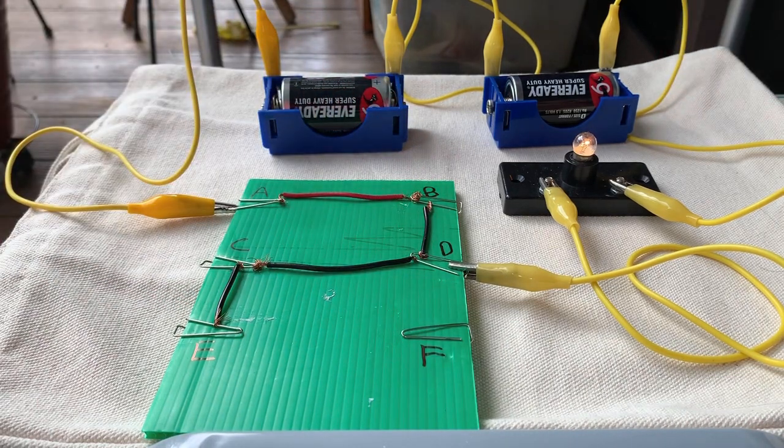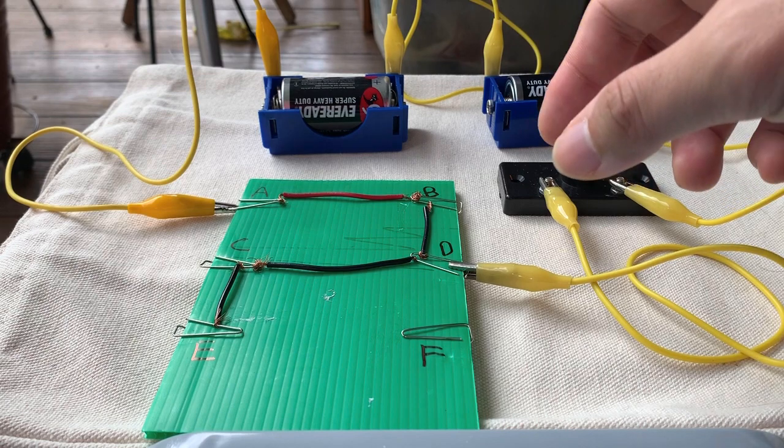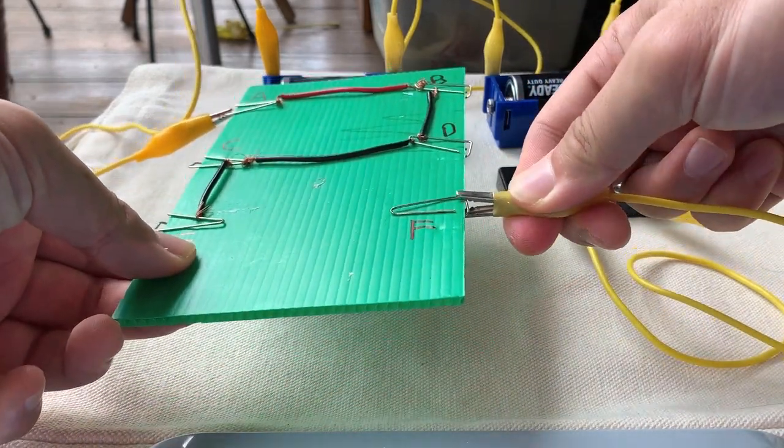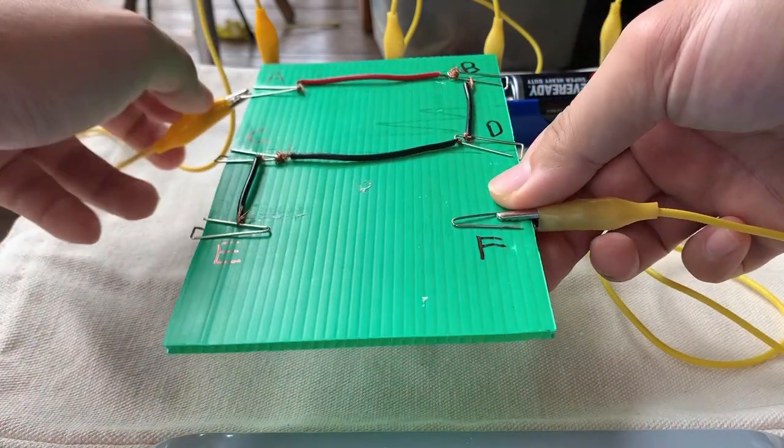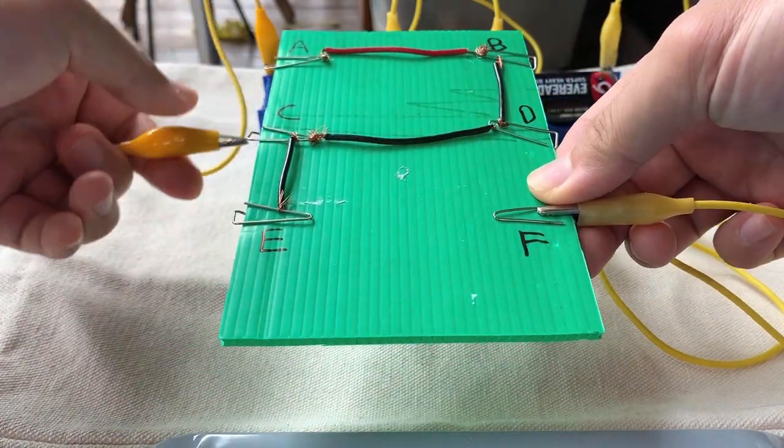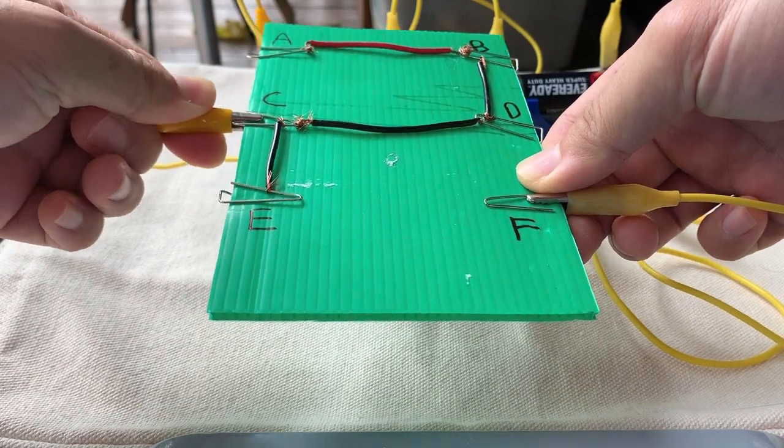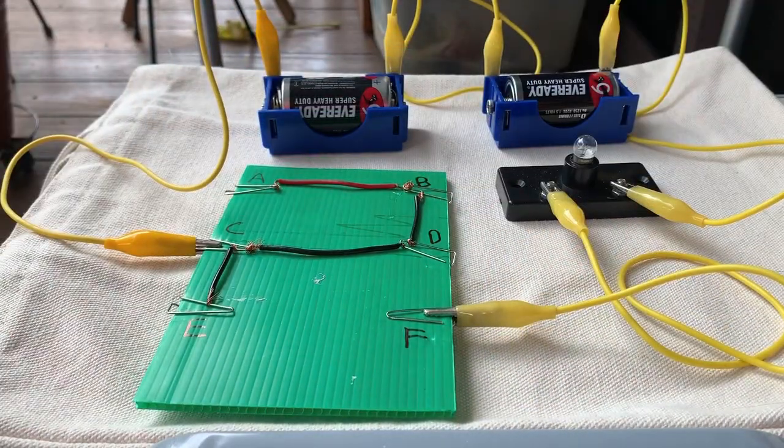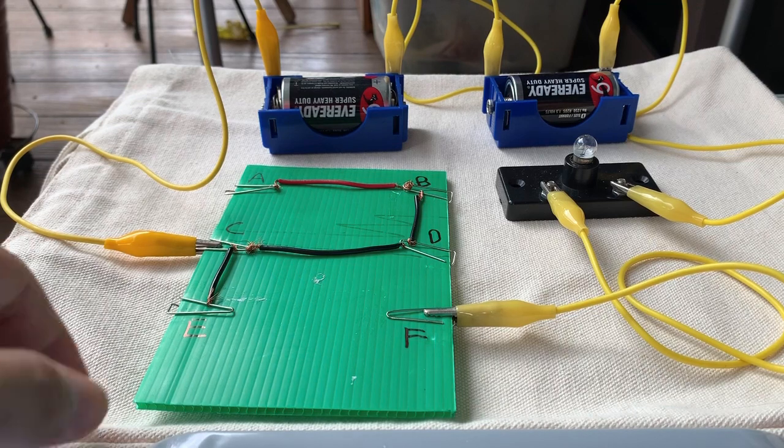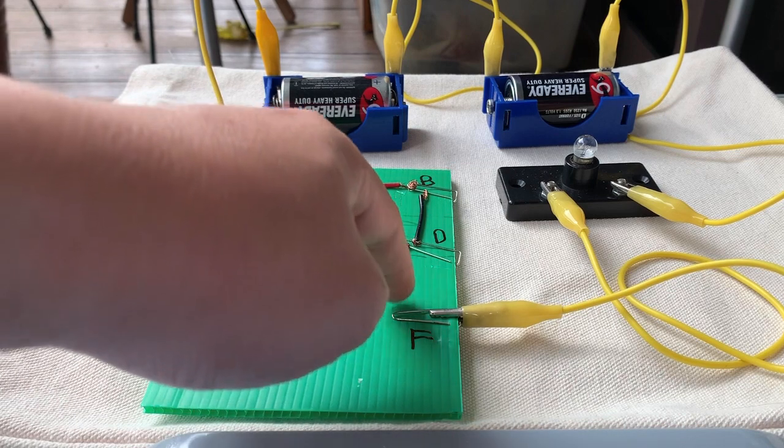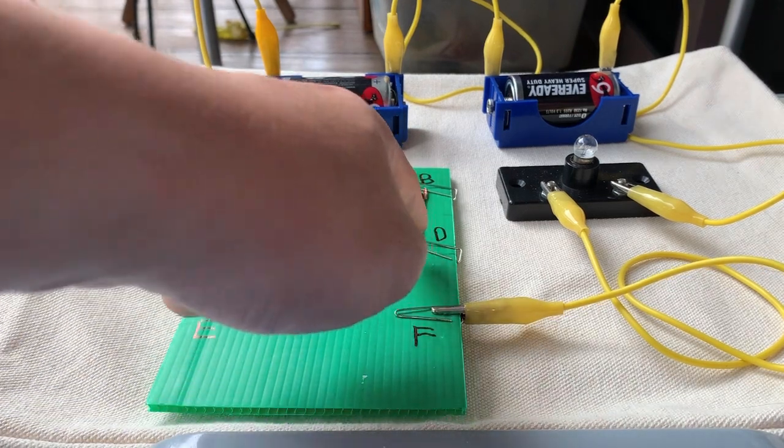Now if I clip C and F. So over here, I'll put it at F, and over here I'll clip to C. As you can see, the bulb did not light up. Why? Because from C to F, there's no wire connecting.